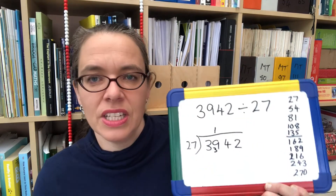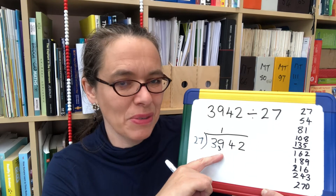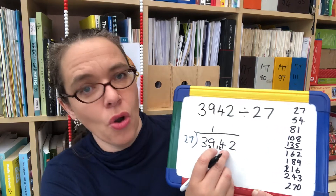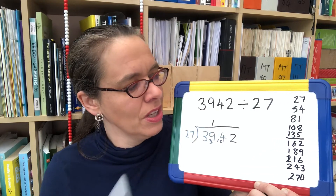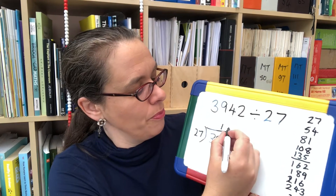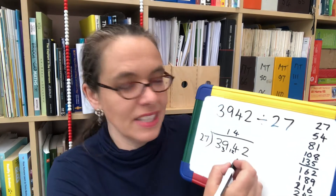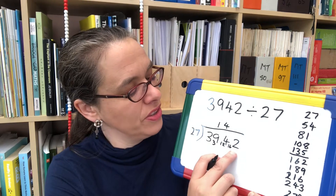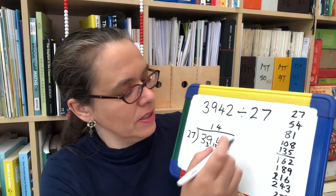So we've got one 100 in the answer. We've used 27 of them, which leaves 12 one-hundreds that we're going to have to break into tens. 12 one-hundreds each give 10 tens, so that's 124 tens because we've got four from the question. 124 tens — how many can we put in each group? We can't get five because we'd need 135 for that, but we can get four. That's 108 used. So 124 subtract 108 is 16. 16 tens broken into ones gives us 160 ones, and we've got the two — so 162 ones split into 27 equal groups. This tells us we can put six in each group. So the answer is 146.